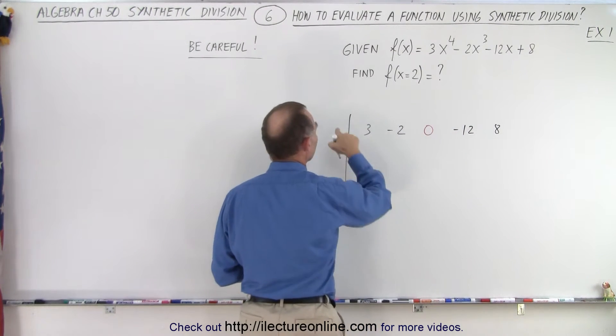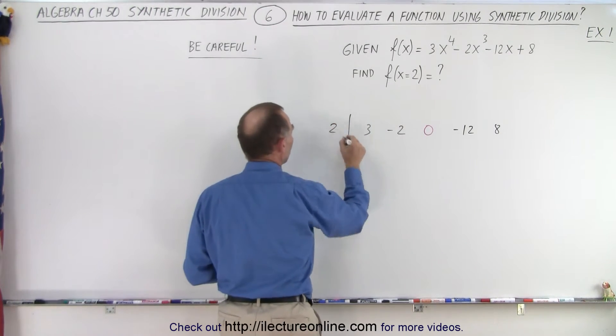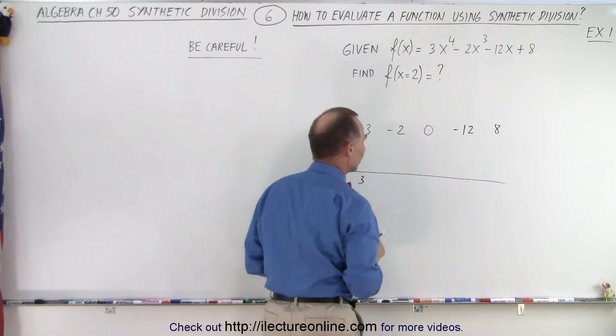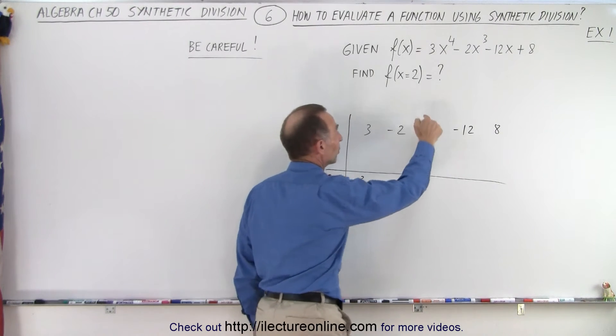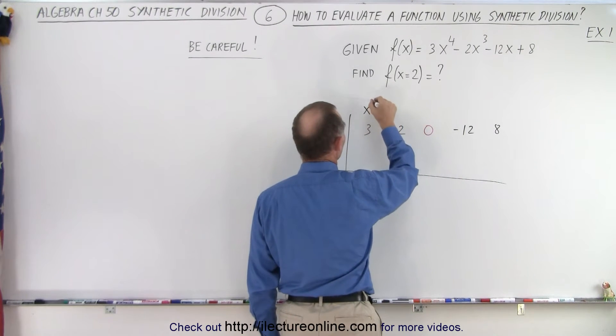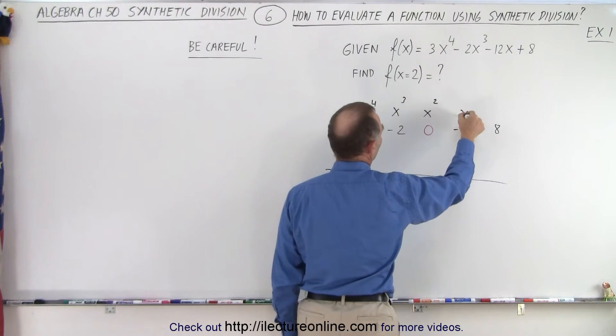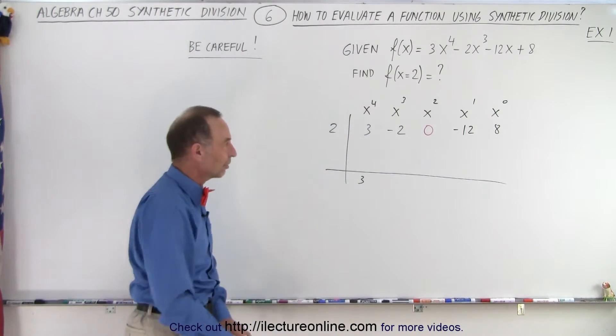Put a line here. Here we're plugging the number that we want to evaluate the function for, for x equals 2. Then we'll put a line over here and we drop down the first number 3. Notice the placeholder. So this is x to the fourth, x cubed, x squared, x to the first, and x to the zero term. You don't need to put that there, it's just for clarification.